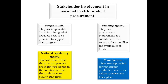Stakeholder Involvement in National Health Product Procurement: The Program Unit is responsible for determining what products need to be procured to support their program. The National Regulatory Agency ensures that procured products are registered for use in the country and meet quality standards. The Funding Agency has procurement requirements as a condition of their support and mobilizes the availability of funds. The Manufacturer is responsible for registering products in countries before procurement takes place.